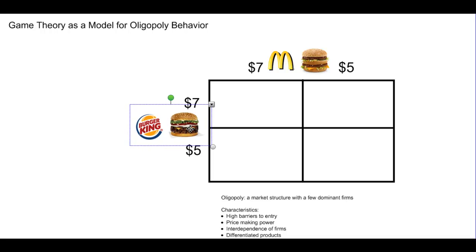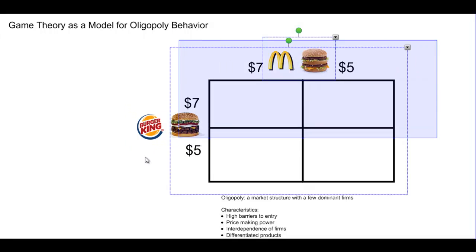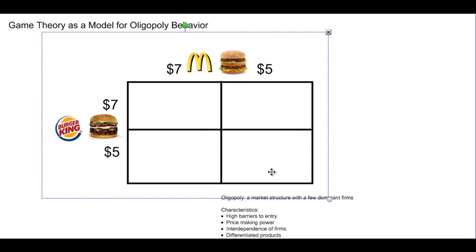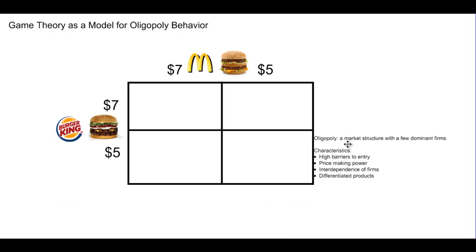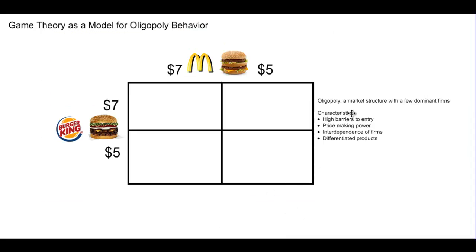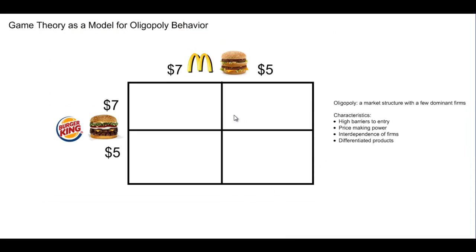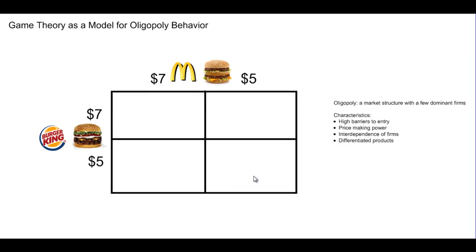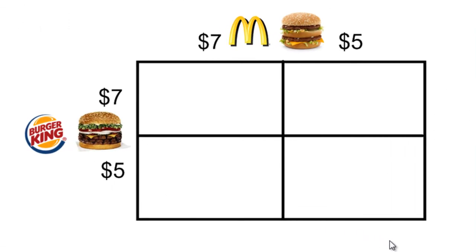The table will show us the levels of economic profit that the two firms will enjoy based on their decision of whether to price their meals at seven dollars or five dollars. We're going to add some values to each of the boxes in this table — values that tell us the level of economic profit that Burger King and McDonald's will earn based on their pricing decision.